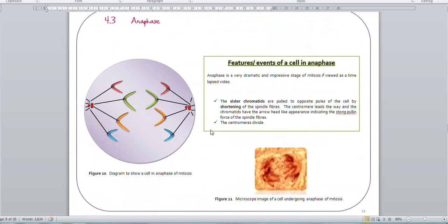Anaphase, of course, now, this is the stage where the spindle fibres shorten and contract. And they pull the sister chromatids to opposite poles. So always remember to say they are pulled to opposite poles. Some people like to say they're pushed. They're not. They're clearly pulled to the opposite poles. Mention that the centromeres divide. And that really should be fine for anaphase.